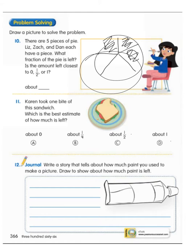And number 12. Yes, I want you to do this. Write a story that tells about how much paint you use to make a picture. Draw to show about how much paint is left. Draw how much paint is left in the paint tube right here. All right.